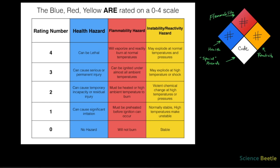Depending on the rating you see on the SDS, you want to provide the appropriate scale for the chemical in each of the three areas — the blue, red, and yellow ratings on the top three areas of the NFPA diamond. The numerical codes zero through four only apply to those three sections. What about the bottom gray/white section? What codes do we use there? Those are slightly different.